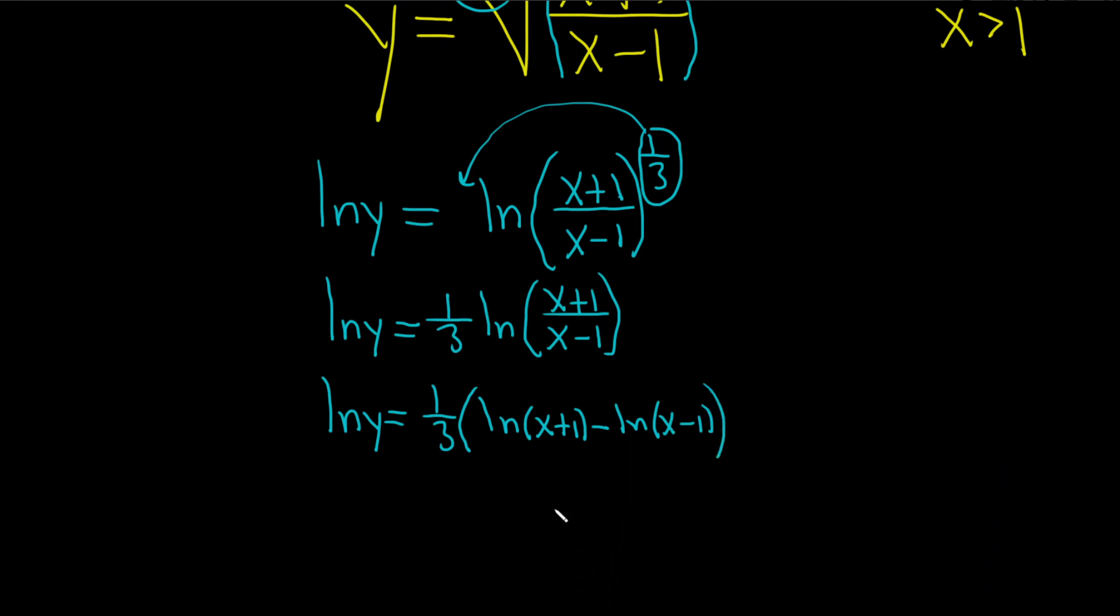And now we're in a good place. We can go ahead and take the derivative. So taking the derivative of both sides with respect to x, on the left-hand side, we just get 1 over y times, chain rule, the derivative of the inside function with respect to x is just dy/dx equals, the 1 third hangs out here. Here we'll get 1 over x plus 1. The derivative of ln x is 1 over x. So here it's 1 over x plus 1 times the derivative of the inside, but that's just 1,